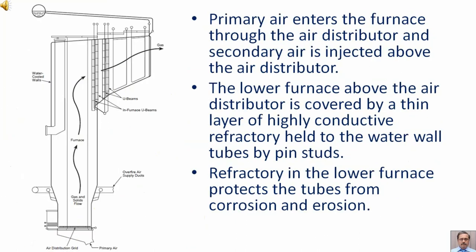Primary air enters the furnace through the air distributor and secondary air is injected above the air distributor. The lower furnace above the air distributor is covered by a thin layer of highly conductive refractory held to the water wall tubes by pin studs. Refractory in the lower furnace protects the tubes from corrosion and erosion.